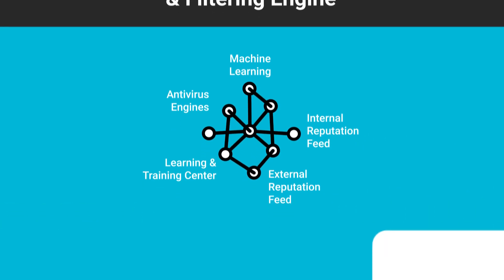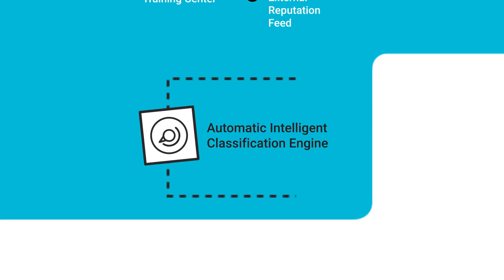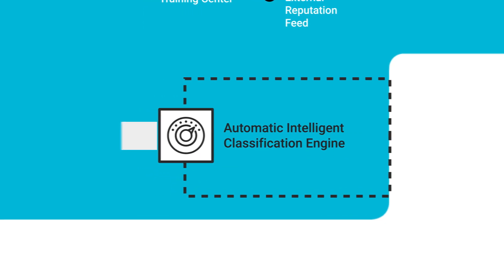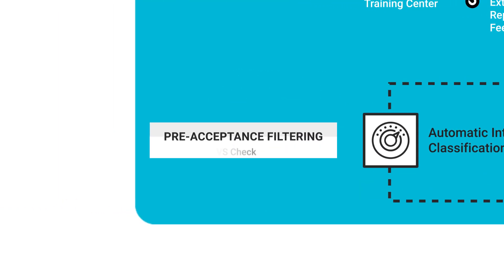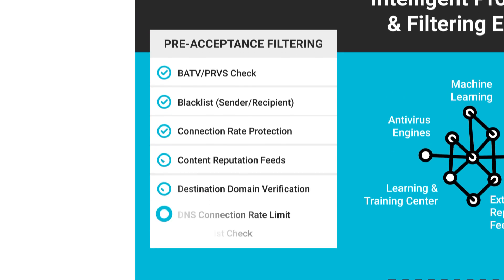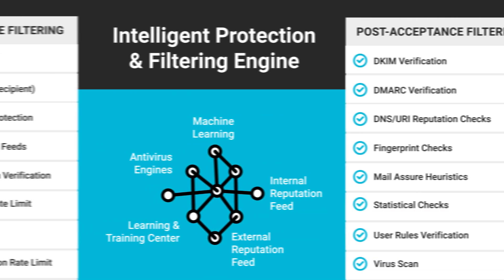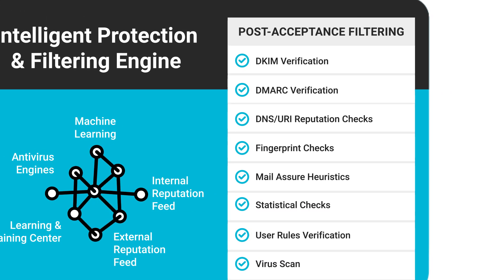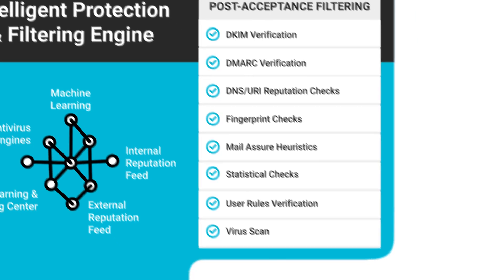Here's how it works. When Mail Assure receives an email, it checks the contents for elements like a bad sender address or a blacklisted IP. If it passes, the system checks the message's data for things like viruses, fingerprinting issues, and DKIM problems.